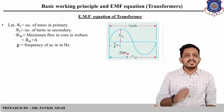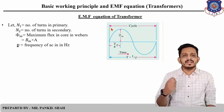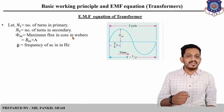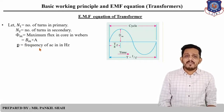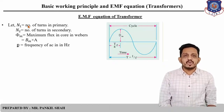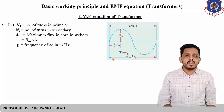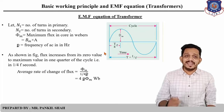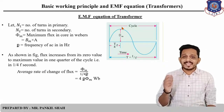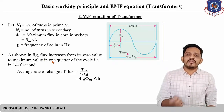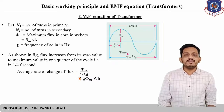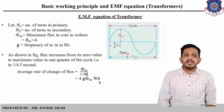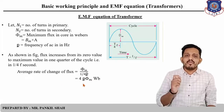Let us now derive the EMF equation. Let N1 be the number of turns of primary winding, N2 the number of turns in secondary winding, φm be the maximum flux in the core where φm = Bm × A, and F be the frequency of the AC supply in hertz. As shown in the figure, flux increases from zero to its maximum value in one quarter of the cycle, that is in 1/(4F) seconds. So the average rate of change of flux is φm divided by 1/(4F), which equals 4F·φm.